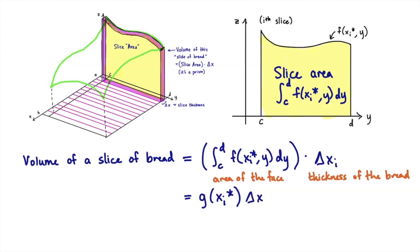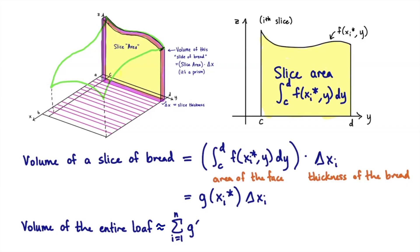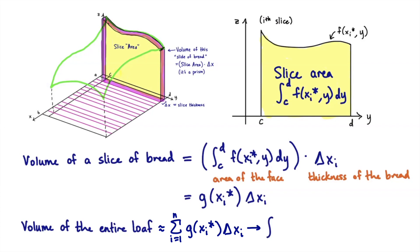The volume of the entire loaf is the sum over all slices i = 1 through n of g(xᵢ*) · Δxᵢ, where we've subdivided the x-axis into n subintervals. This is exactly the type of calculus 1 Riemann sum for the function g(x) from x = a to x = b. So this is like the integral from a to b of g(x) dx. Replacing g(x) with how we defined it, that becomes the integral from a to b of the integral from c to d of f(x, y) dy dx.